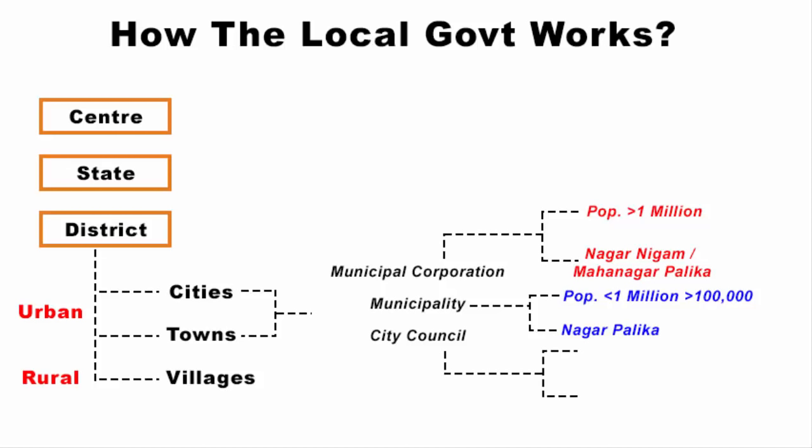Similarly, if an urban place has more than 30,000 and less than 1 lakh inhabitants, then that place has a city council, also known as Nagar Parishad. These places are neither a full-fledged urban area nor a full-fledged rural area — they are in between.